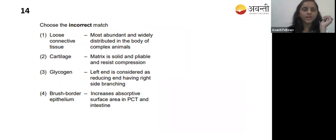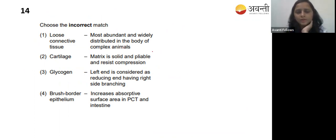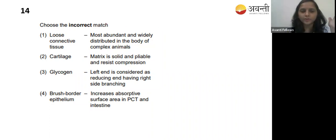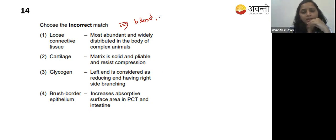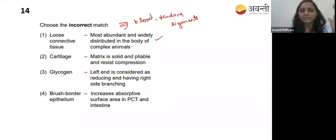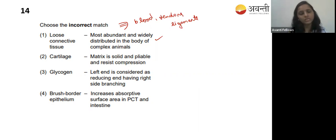Fourteenth question: choose the incorrect match. Option one - loose connective tissue is the most abundant and widely distributed in the body of complex animals - yes, blood, tendons, and ligaments are loose connective tissue. That is correct. Option two - cartilage matrix is solid, pliable, and resists compression - yes, that is also correct.